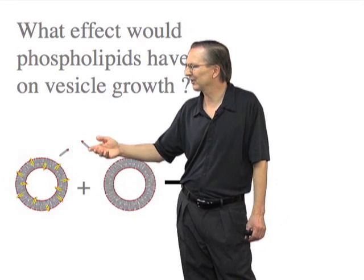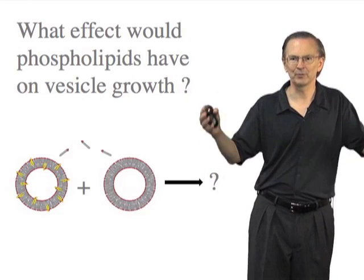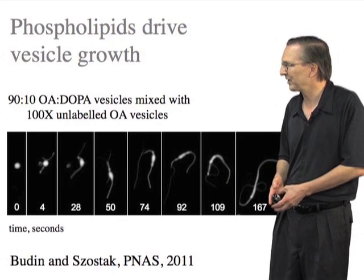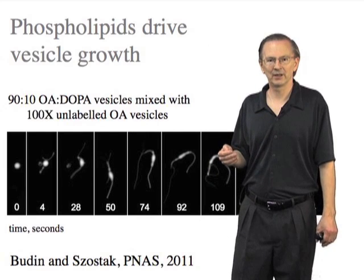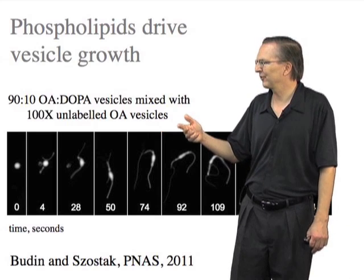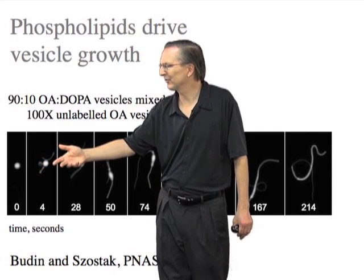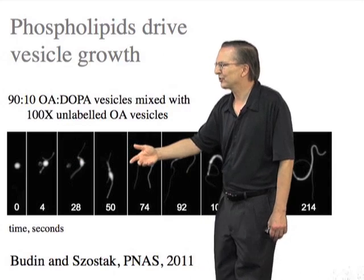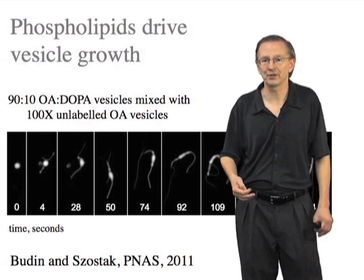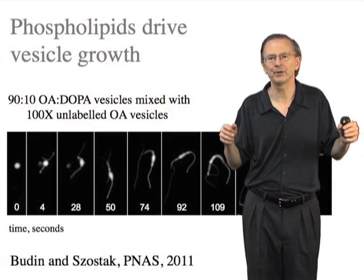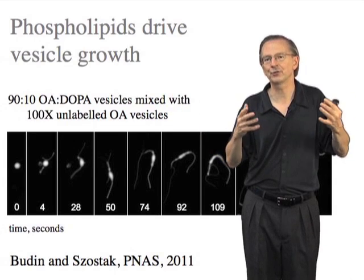What turned out to be particularly interesting is what happens when these vesicles are mixed with pure fatty acid vesicles. As you can see on the next slide, even a little bit of phospholipid confers a really dramatic ability on that vesicle to absorb fatty acids from its neighboring fatty acid vesicles. Itai prepared vesicles with 10% of a phospholipid in an oleic acid background and mixed them with a large excess of pure fatty acid oleic acid vesicles. The vesicle starts out as a spherical structure — you can see the encapsulated dye. Within seconds, you see the protrusion of small filaments, and over time a transformation into a filamentous structure, much as seen before following the addition of a large excess of fatty acids. But this time, the process of growth is being driven purely by the initial vesicle absorbing fatty acids from its neighboring molecules — it's essentially growing by eating its neighbors.